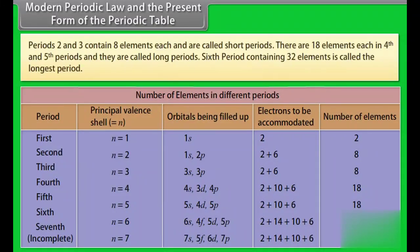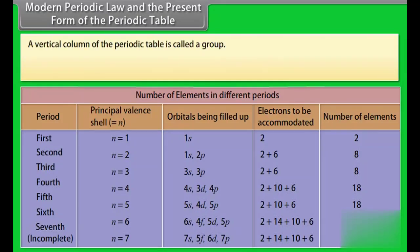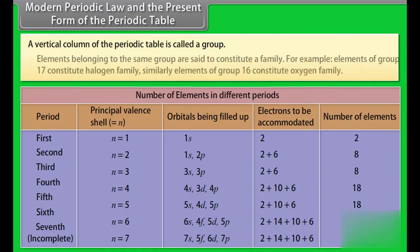Periods 2 and 3 contain 8 elements each and are called short periods. There are 18 elements each in the 4th and 5th periods, and they are called long periods. The 6th period containing 32 elements is called the longest period. A vertical column of the periodic table is called a group. Elements belonging to the same group are said to constitute a family. For example, elements of group 17 constitute the halogen family, and elements of group 16 constitute the oxygen family.